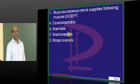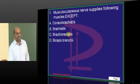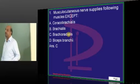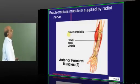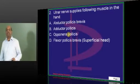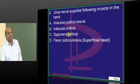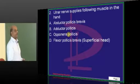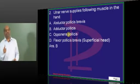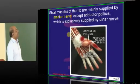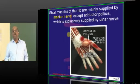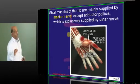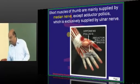Musculocutaneous nerve supplies all these muscles except - easy question. Brachioradialis, what is it supplied by, doctor? It is supplied by the radial nerve. Ulnar nerve does not supply? Most of the muscles of the thumb are basically supplied by what, doctor? Thumb. It is basically by the median nerve, except the adductor pollicis which is supplied by ulnar nerve is what you need to remember.